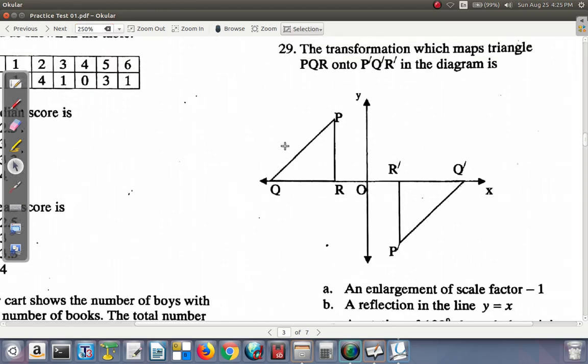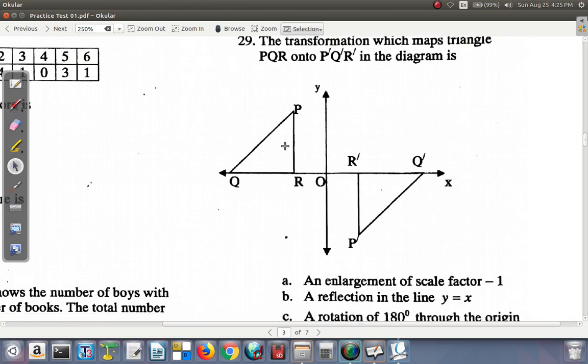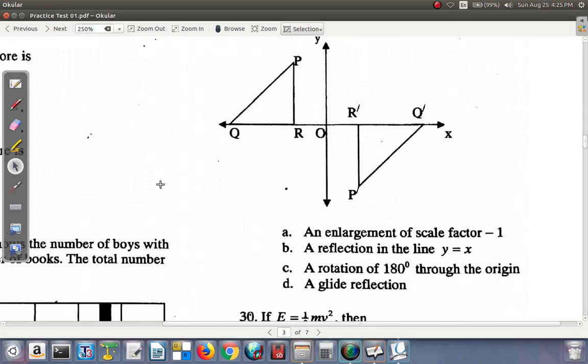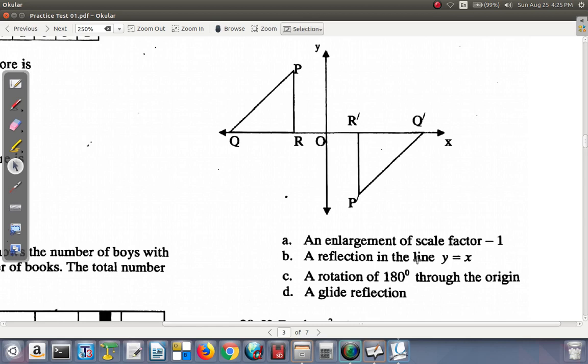It says the transformation which maps triangle P, Q, R, to the triangle P' Q' R' in the diagram is? So we're supposed to find out what transformation maps the triangle on your left to the one on your right.